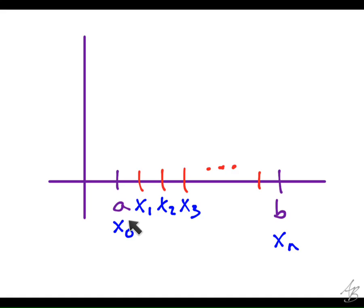Now, if A is equal to X sub 0 and B is equal to X sub N, we talked about this already, but how do we find the width between each of those intervals? How do we find delta X? B minus A over N, right? So we take the width of the interval.